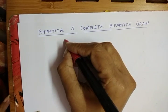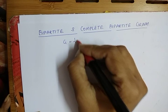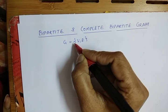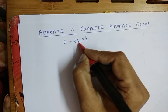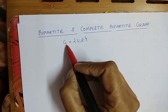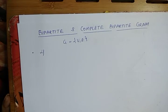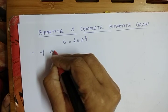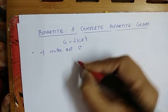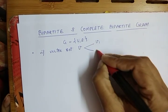As we know, a graph is represented as G equals V and E, where V is a vertex set and E is an edge set. A graph G consists of V and E. Now, this graph G is called Bipartite only if the vertex set V can be partitioned — or you can say split — into two parts, V1 and V2.